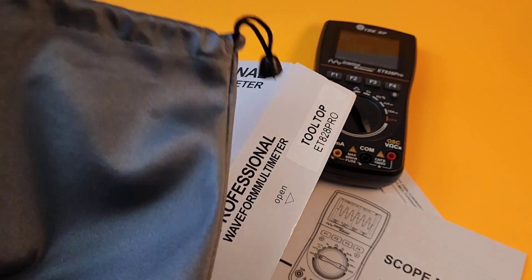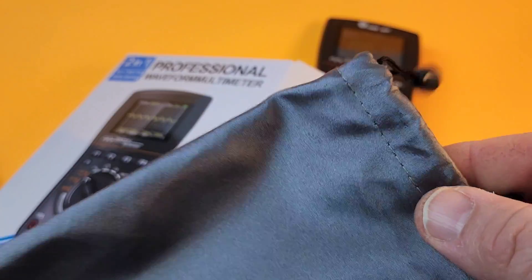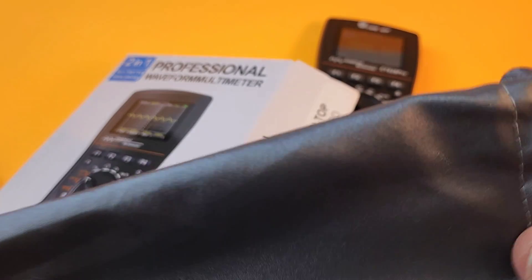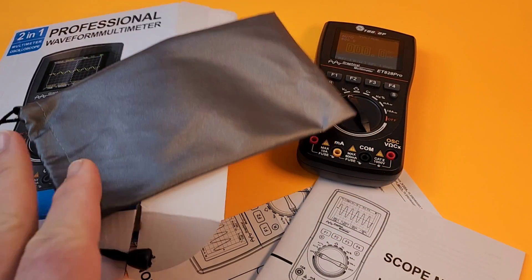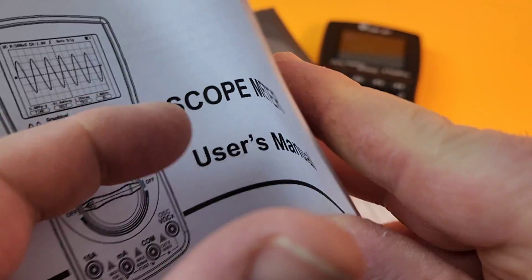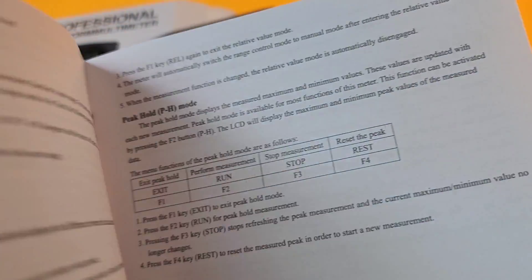And look at that. They even give us one of those cloth-style carry cases. And by the way, it passed the smell test. It actually smelled good. What else do you get? Well, you get your scope meter, manual, user manual. Pretty verbose.